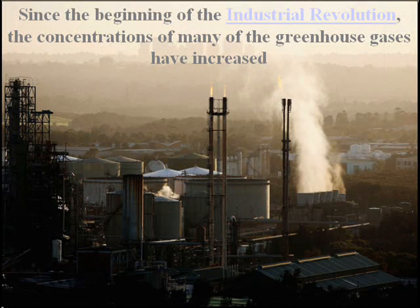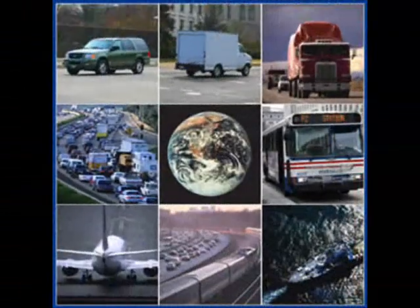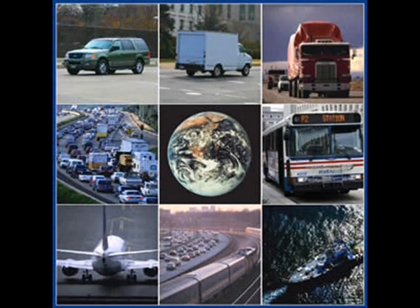Since the beginning of the Industrial Revolution, the concentrations of many greenhouse gases have increased. The concentration of carbon dioxide has increased by about 100 parts per million, from 280 parts per million to 380 parts per million. The first 50 parts per million increase took place in about 200 years, from the start of the Industrial Revolution to around 1973. The next 50 parts per million increase took place in about 33 years, from 1973 to 2006.